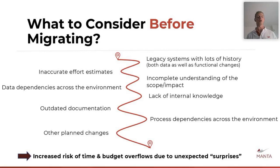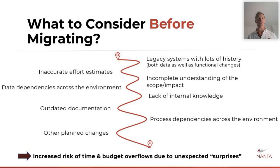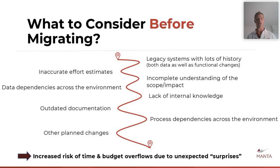Lack of internal knowledge is another challenge — as systems were developed over years, people originally part of the implementation or design team may be long gone or have moved to different roles. That internal knowledge about why things were designed a certain way is fading out. Outdated documentation is familiar to everyone. All of these lead to unexpected surprises resulting in delayed timelines, extended scope, and extended budget. We address this with data lineage by having the environment analyzed ahead of time to perform automated analysis assessing the complexity and scope, and to define migration phases.